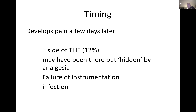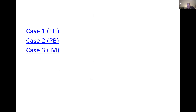If pain develops a few days later, especially on the side of your interbody fusion, it may well be neuritis from nerve root retraction to get the cage in. It becomes less frequent as you become more skilled, but up to about one in eight patients will have a neuritis after a TLIF. Of course it may be hidden — there's always the morphine honeymoon for the first few days. After mobilization the pain may emerge. You may also have instrumentation cut-out, and infection presents between days four and seven.